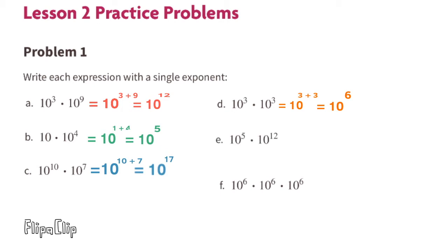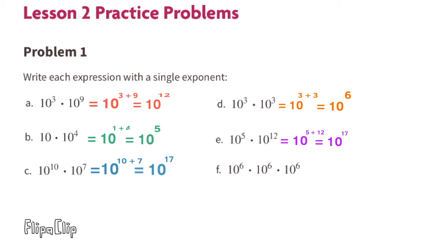Part E: 10 to the power of 5 times 10 to the power of 12. Exponent 5 plus exponent 12 equals exponent 17, so you're going to multiply 10 times itself 17 different times. 10 to the power of 5 times 10 to the power of 12 equals 10 to the power of 17.